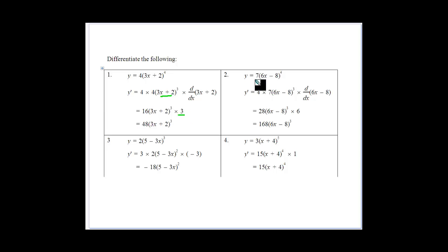This one: y equals 7 times the square root of (6x - 8). Again, bring your power down, multiply by the number in front, get the 1 from the power, bracket stays the same, derive the bracket gives you the 6. Clean up and multiply your numbers.